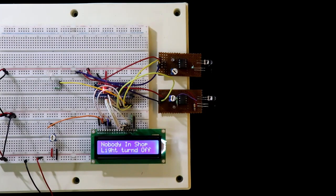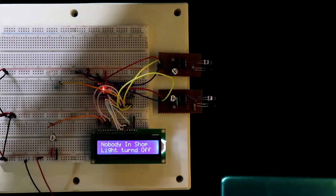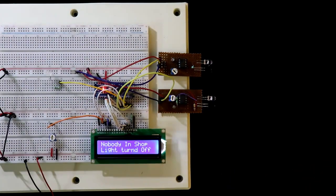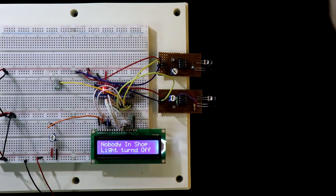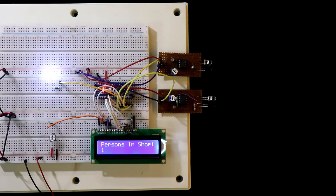As nobody in the room or the shop, the LED is turned off. Let's say this side is your shop or your room and this side is outside. So someone has to come from this side. Now coming from outside, one person is entered, so the LED is turned on.